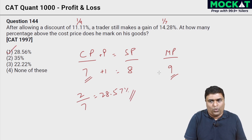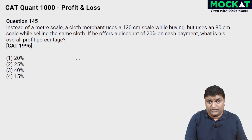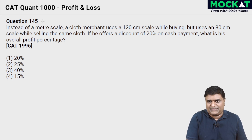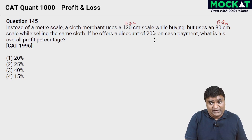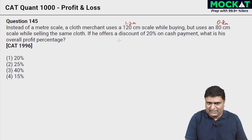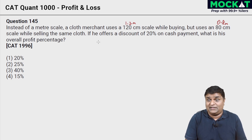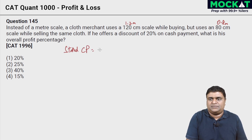Question 145 is an earlier CAT question. Instead of a meter scale — 100 centimeters — a cloth merchant uses a 120 centimeter scale while buying, and an 80 centimeter scale while selling. He also offers a discount of 20 percent on cash payment. What is the overall profit percentage? The cost price and selling price are understood to be the same stated price — that's the only way to solve it.